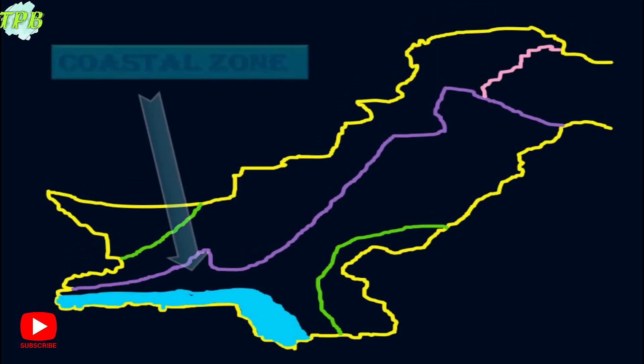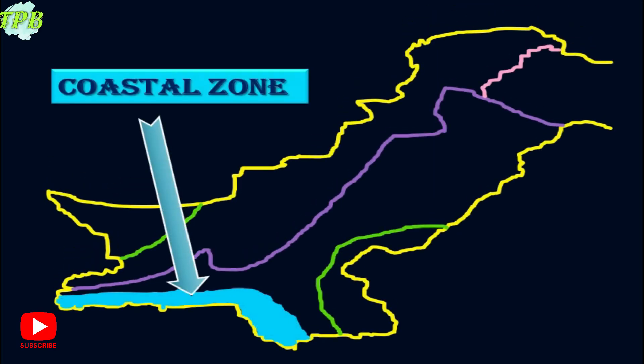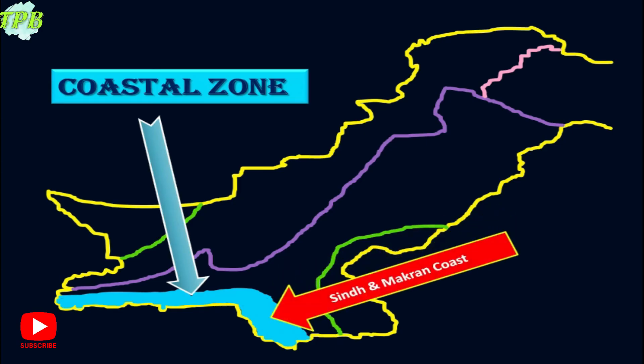The last climatic zone of Pakistan is the coastal zone. As the name suggests, it includes the Sindh and Makran coastal region.